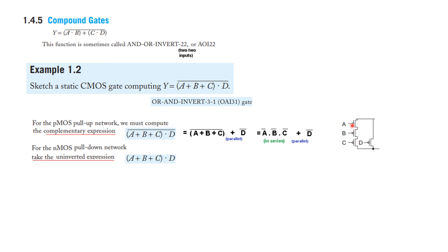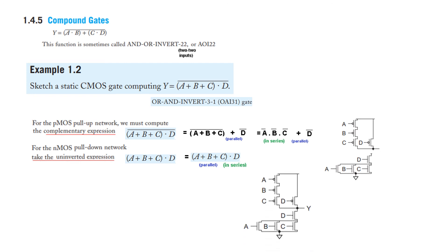For the NMOS part, the AND gate means series and the OR gate means parallel. There are two sets of series components and then three in parallel. The result is two series sets connected in parallel, giving the final NMOS network. Combined with the PMOS network, this is the final answer for the OAI-31 gate. I hope this gives you an understanding of how to solve and design CMOS logic circuits. Thank you.